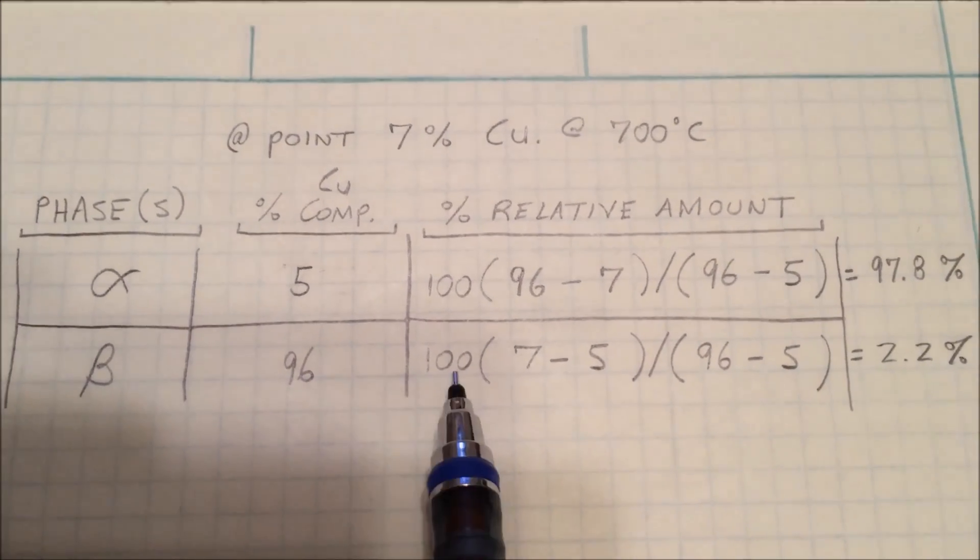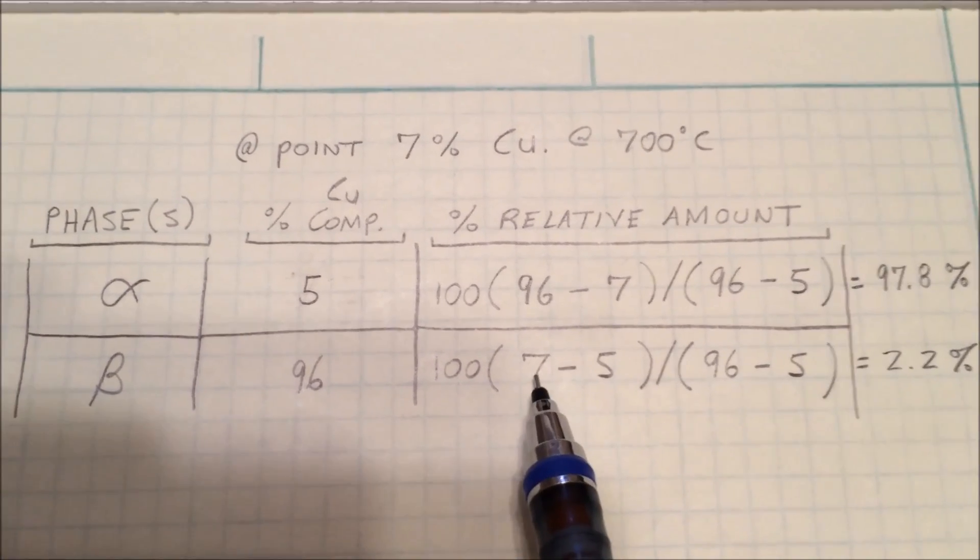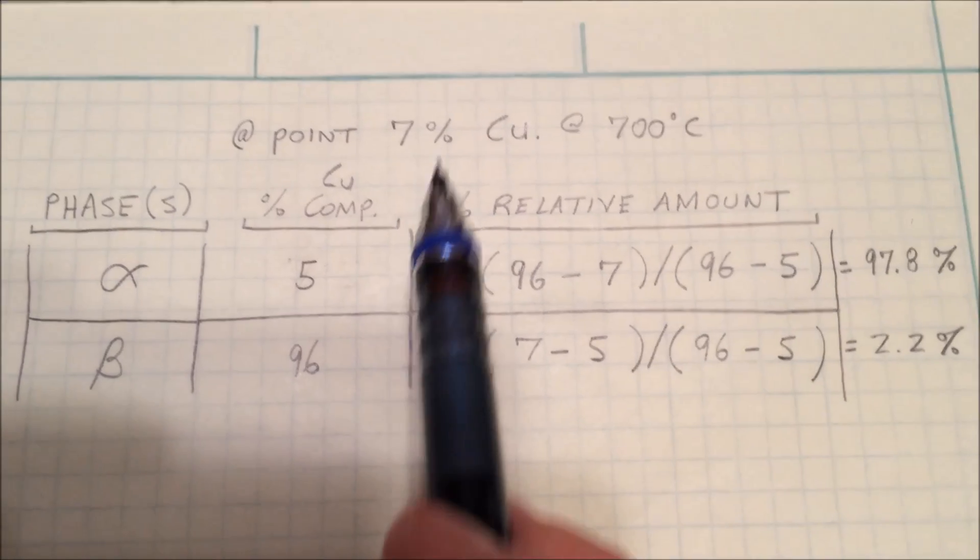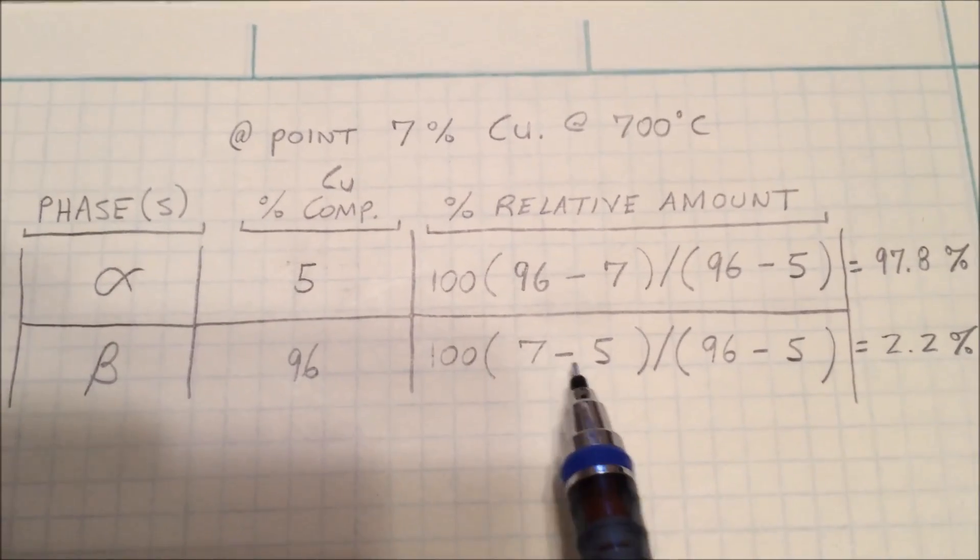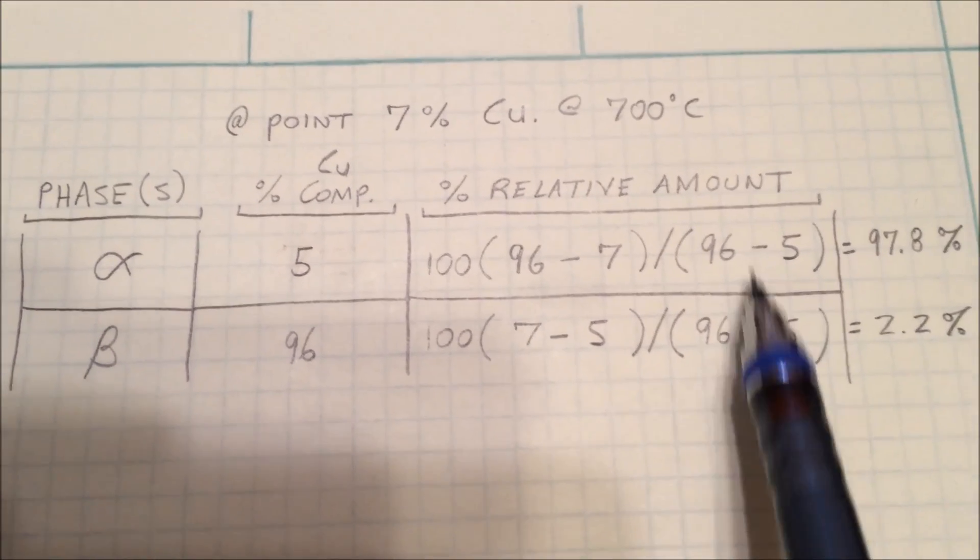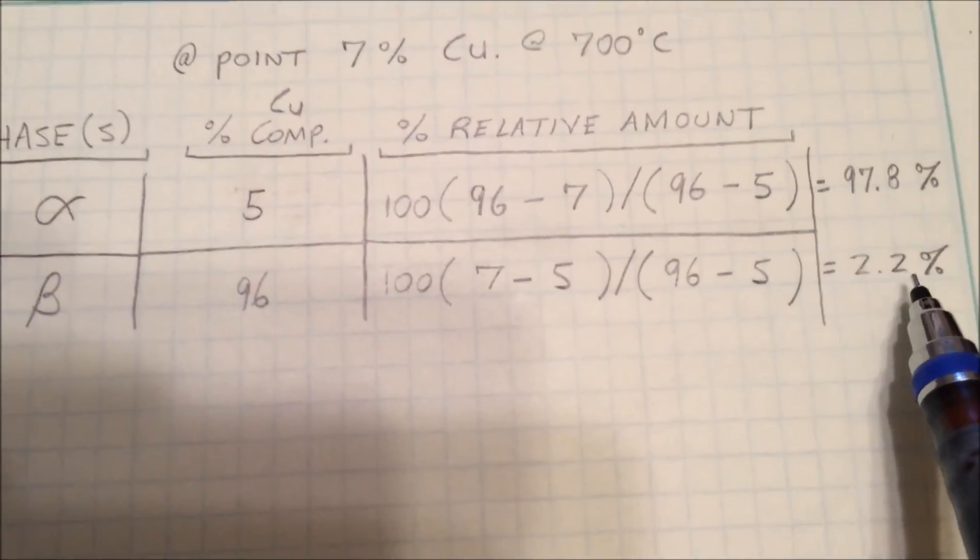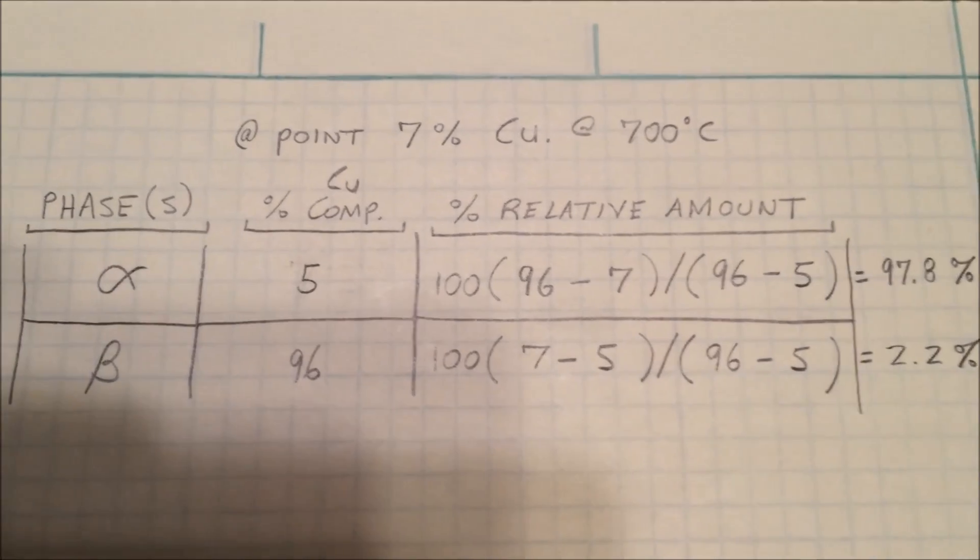Now, down on this line for beta, you would do the same: 100 for the percentage times 7, which is our relative amount, minus 5, which is our percent alpha composition, all divided by the same thing, the difference, 96 minus 5. That gives us 2.2% in the beta phase.